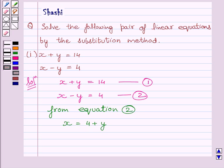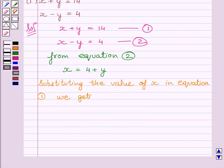Now, we will substitute this value of x in equation 1. Substituting the value of x in equation 1, we get 4 plus y plus y equals 14, which implies 4 plus 2y equals 14.